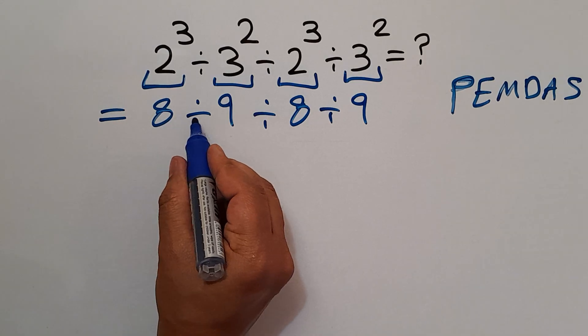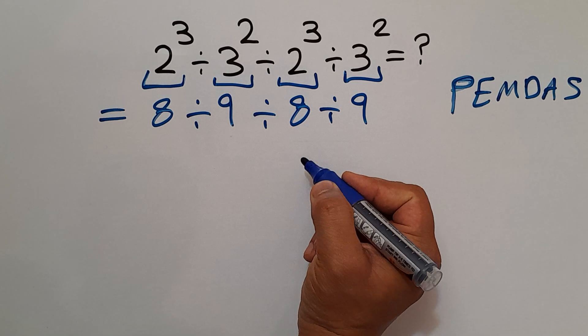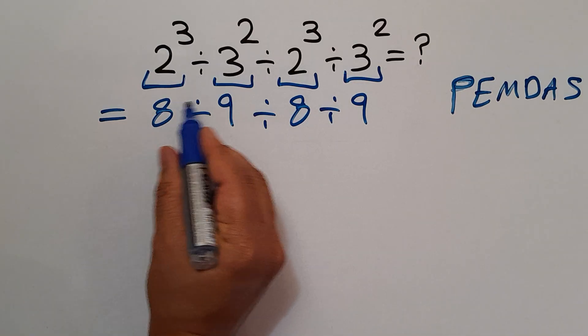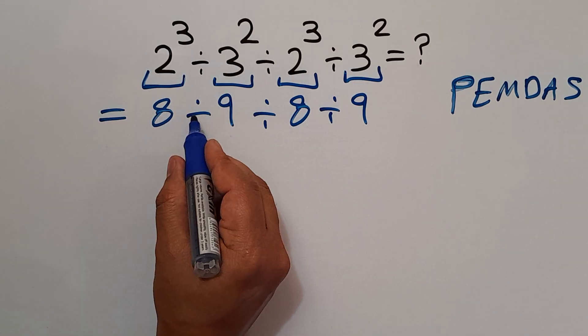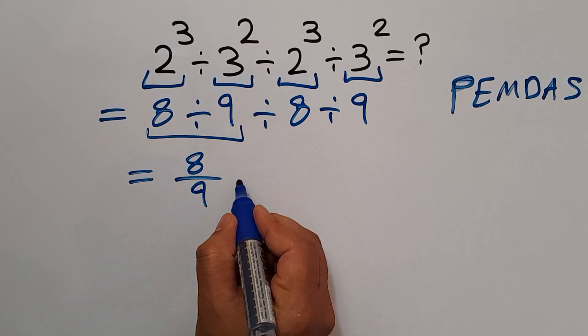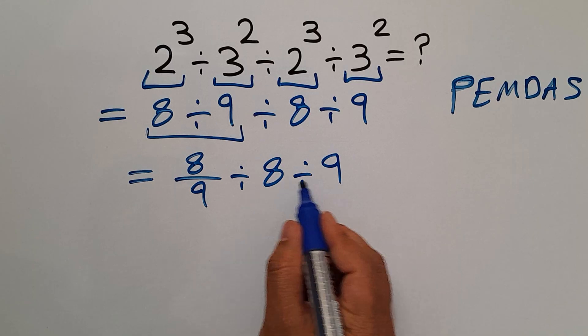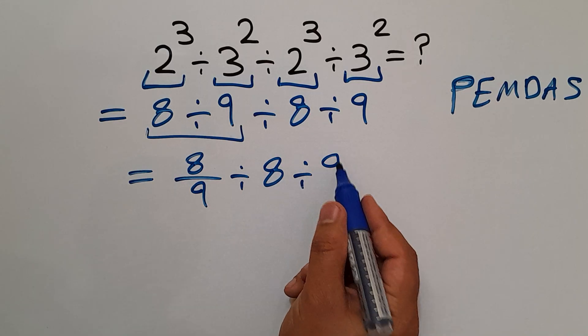So here we have 8 divided by 9 divided by 8 divided by 9. We have to work from left to right. 8 divided by 9 can be written as 8 over 9, divided by 8 and divided by 9.